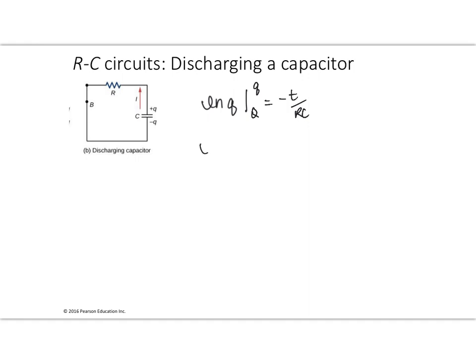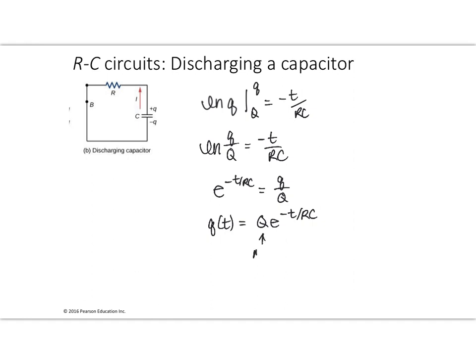We get the natural log of little q over big Q. Using the definition of the natural log, we arrive at: e to the minus t over RC equals little q over big Q. Solving for little q as a function of time: q(t) equals Q times e to the minus t over RC. This makes sense — we start with the maximum charge and it falls off as time goes on. We're discharging the capacitor, so it makes total sense.